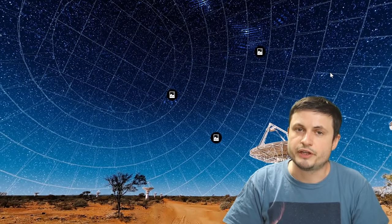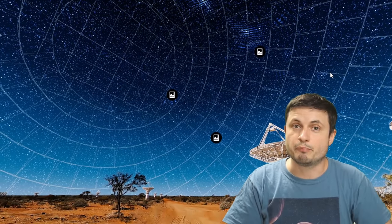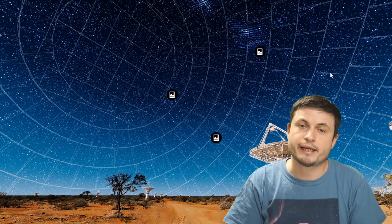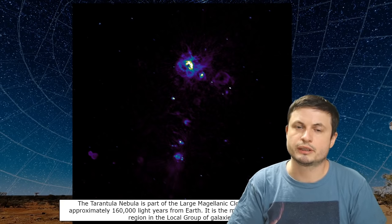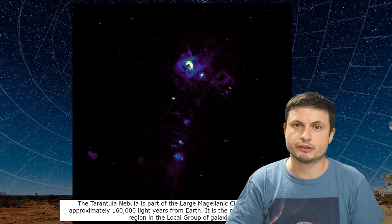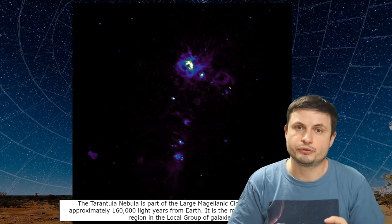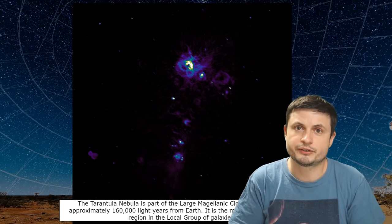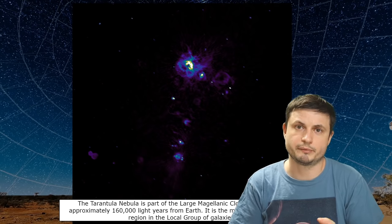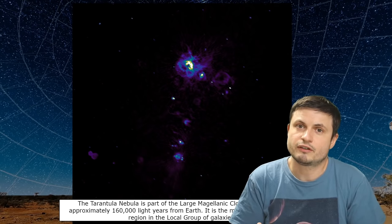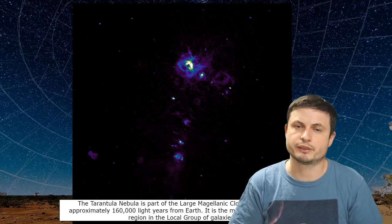But when it comes to this particular observation and this particular survey, the mind-blowing part is how quick and how detailed all of this was. Here's by the way what the Tarantula Nebula inside of the Large Magellanic Cloud looks like. And honestly, I was super excited to see this in so much detail because first of all, Tarantula Nebula is only visible from the southern part of the planet. And second of all, we've never really had such a detailed observation of some of these objects.